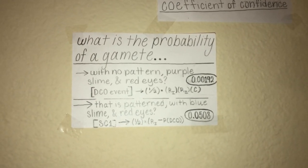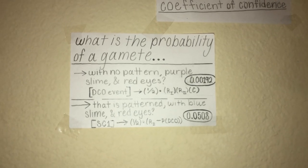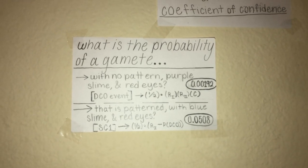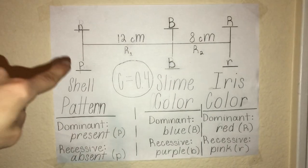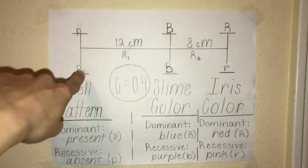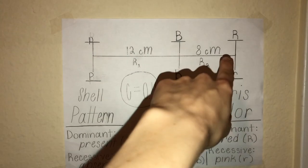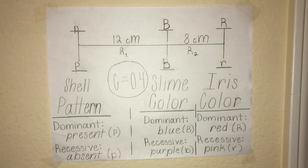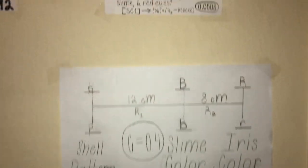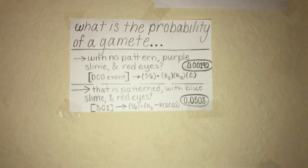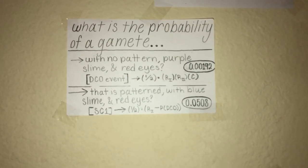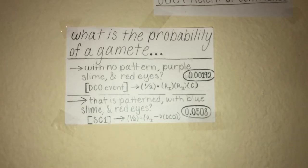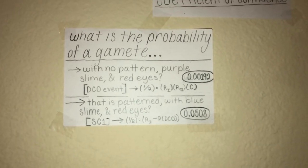Similarly, to calculate for another gamete — one that is patterned with blue slime and red eyes — we can see this is a single crossover event in the first region. To calculate that, we do one-half times R1 minus the probability of the DCO, which is R1 times R2 times C.